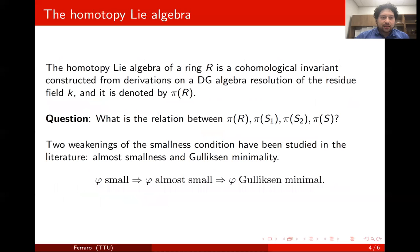Recently, my collaborators and I have been wondering about the relation between a different homological invariant of these four rings. The invariant we focused on is the homotopy Lie algebra of the ring, which is a homological invariant constructed from derivations on a DG-algebra resolution of the residue field, and it is denoted by π of the ring. We were wondering how these four homotopy Lie algebras relate to each other.